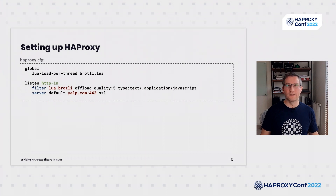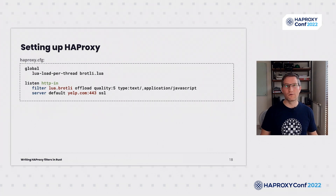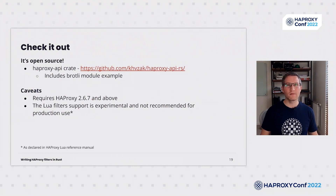This is an example of setting up our Brotli filter in a proxy section and passing various parameters. We can control the quality level, list of content type prefixes, offload mode, and so on. What is more important is that we can achieve fantastic flexibility by adding logic to check HAProxy variables to dynamically control Brotli. For example, we can add conditions to enable our filter for only specific user agents, or only for traffic to a specific endpoint, and so on. The Brotli compression module is open source. Please check it together with the HAProxy API crate that I maintain, where you can also find other examples of modules built in Rust.